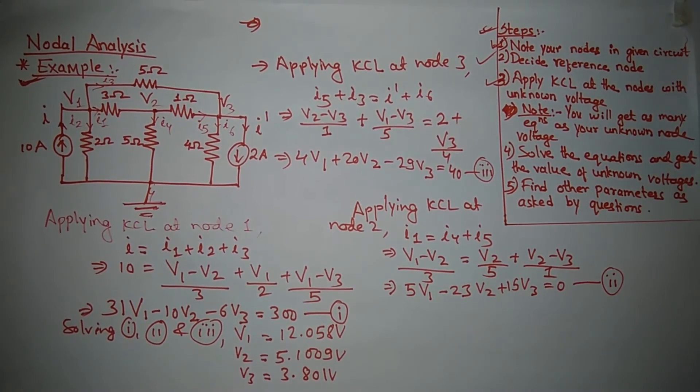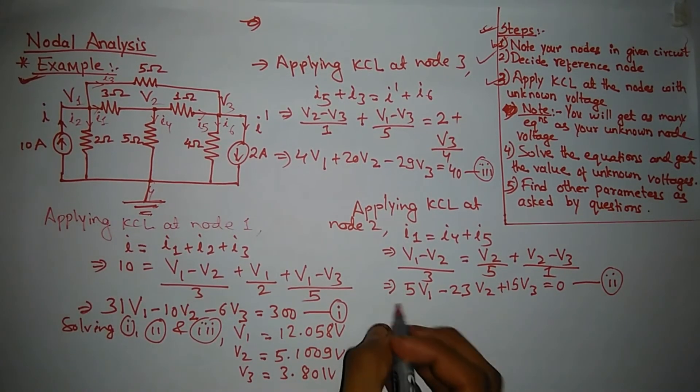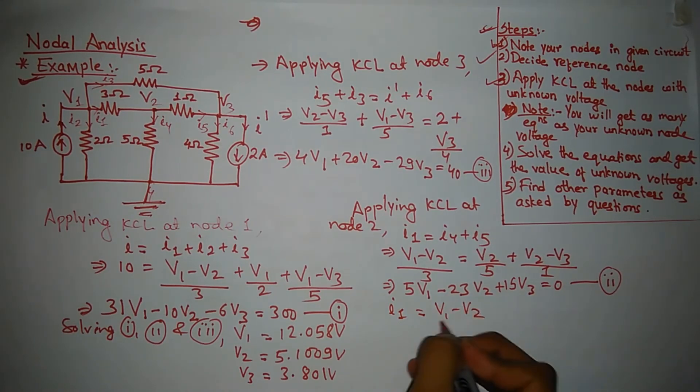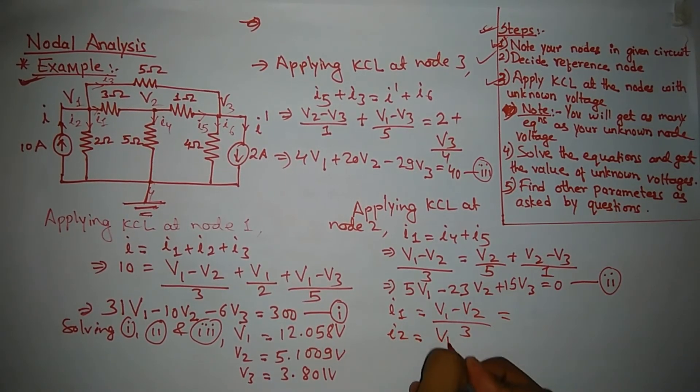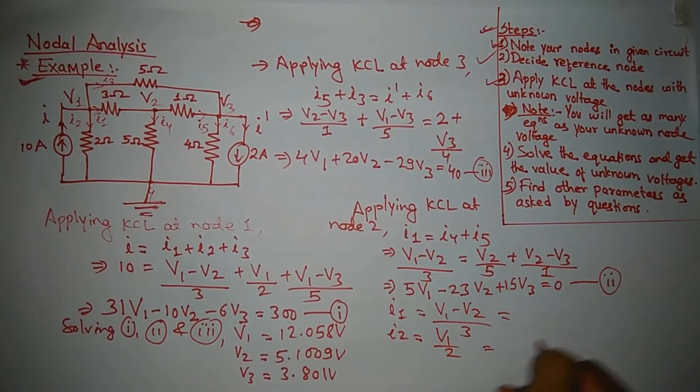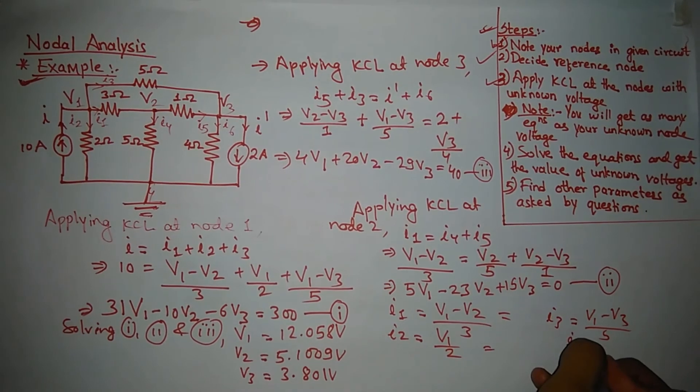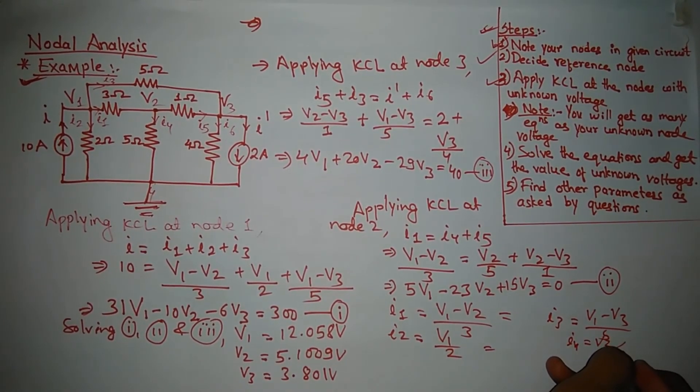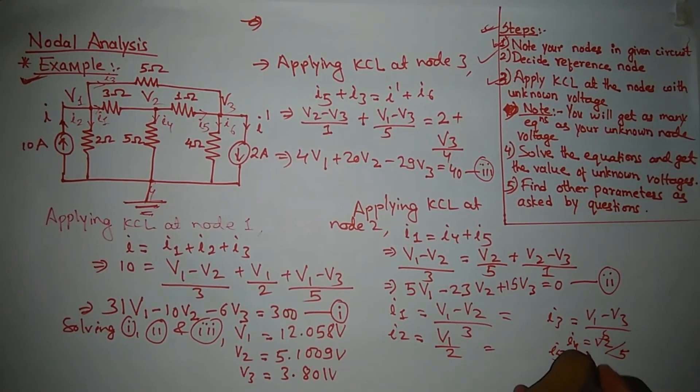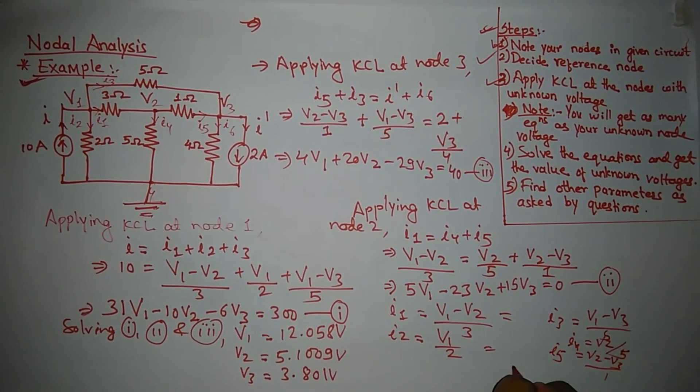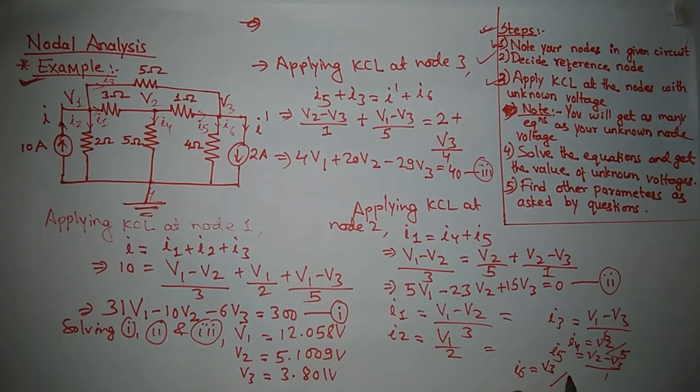Now you can find other parameters as asked in your question. If you are asked to find I1, you can easily get it by using V1 minus V2 upon 3. Similarly, I2 you can easily get by using V3 upon 2. Similarly, I3 is V1 minus V3 upon 5, I4 is V2 upon 5, I5 is V2 minus V3 upon 1, and I6 is V3 upon 4.